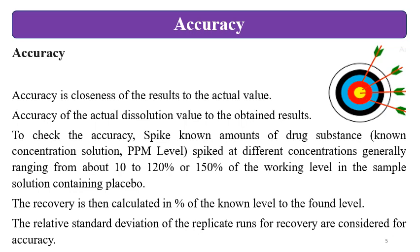First, we will see accuracy. Here you can see the figure — all the arrows are in the red area and two of these are in the yellow area. The aim is in the yellow area and the range is in the red area also, so the results are accurate. Accuracy is the closeness of the results to the actual value. These results are accurate because they are close to the actual value. Accuracy refers to the actual dissolution value versus the obtained results.